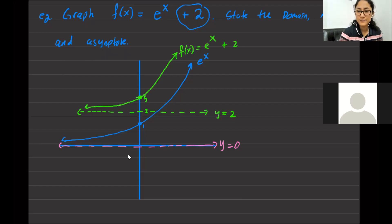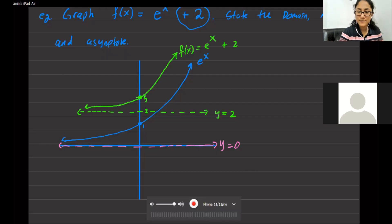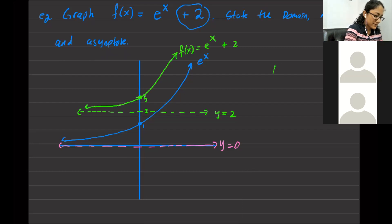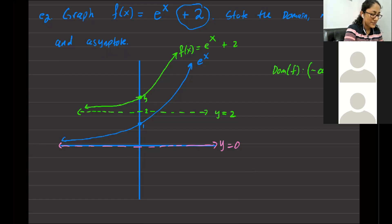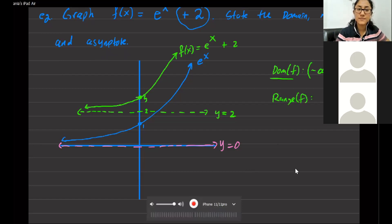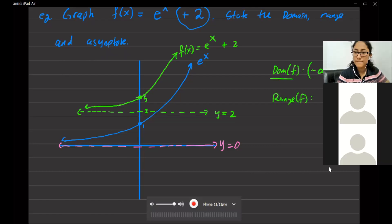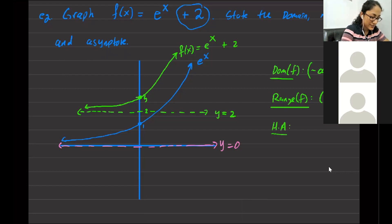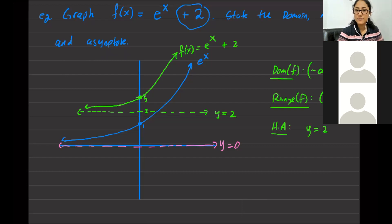Any questions on how we get the graph? Now, the domain of f is all real numbers — for exponential functions, everything makes sense. The range of f will be from 2 to infinity, from the asymptote upward. And we have a horizontal asymptote at y equals 2. Once you have the right graph, you can figure out domain, range, and asymptote just by looking at it.